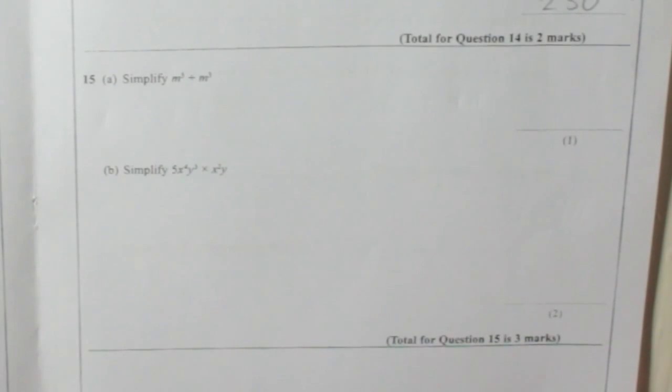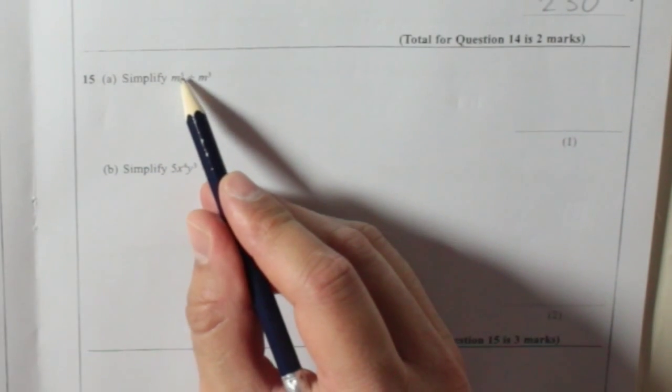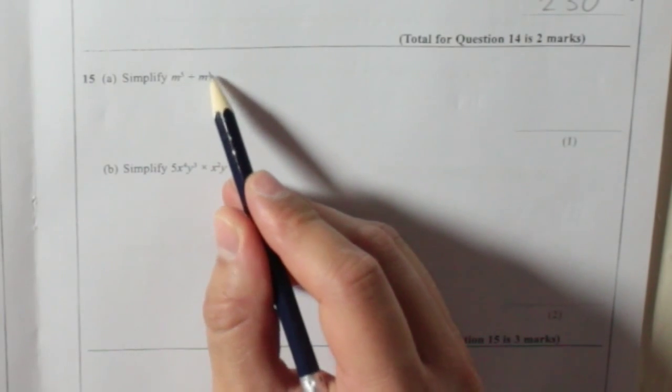Question 15. Simplify m to the power of 5 divided by m to the power of 3.